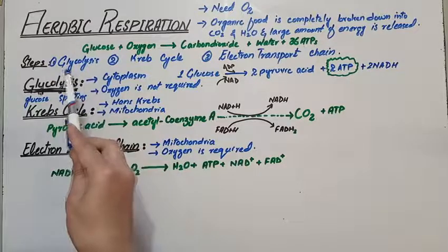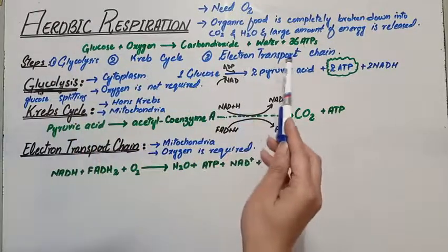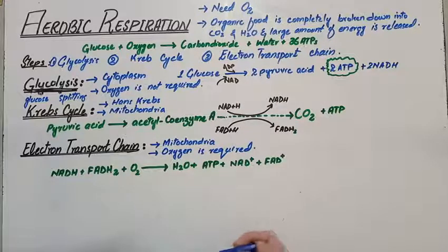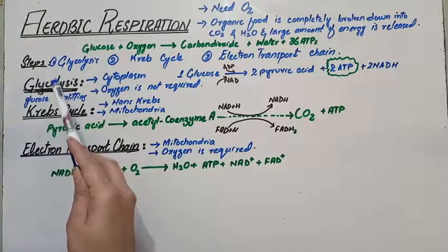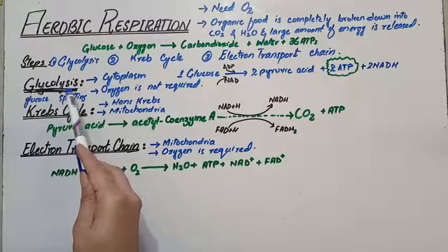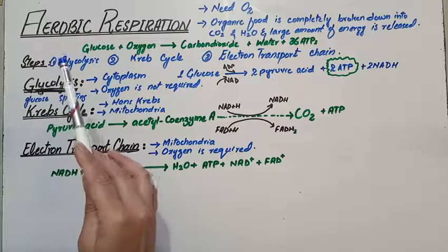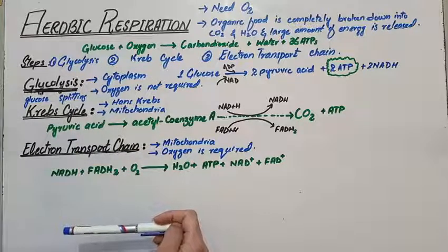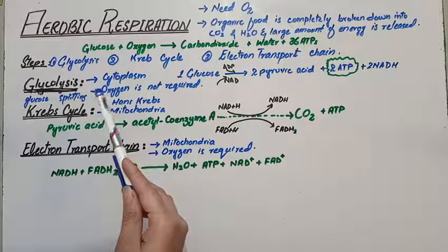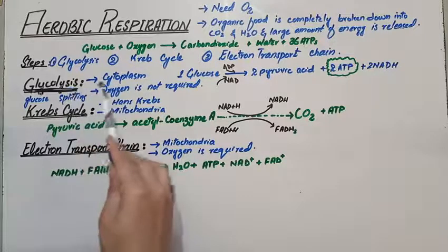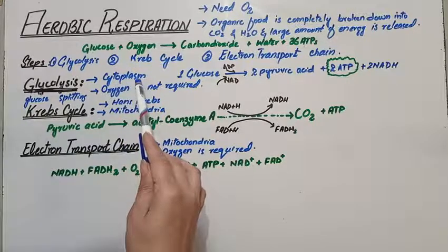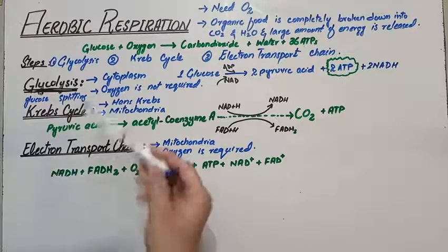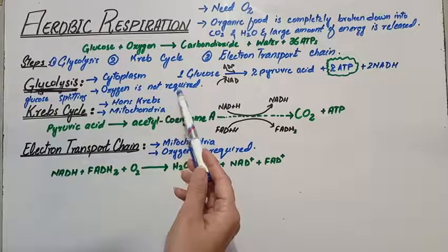The following steps are involved in aerobic respiration: glycolysis, the Krebs cycle, and the electron transport chain. Let's study them one by one. Glycolysis is derived from two words — 'glyco' means glucose and 'lysis' means splitting — so it is basically the breakdown of the glucose molecule. Glucose is a six-carbon compound. Glycolysis occurs in the cytoplasm of a cell, and oxygen is not required for this process.